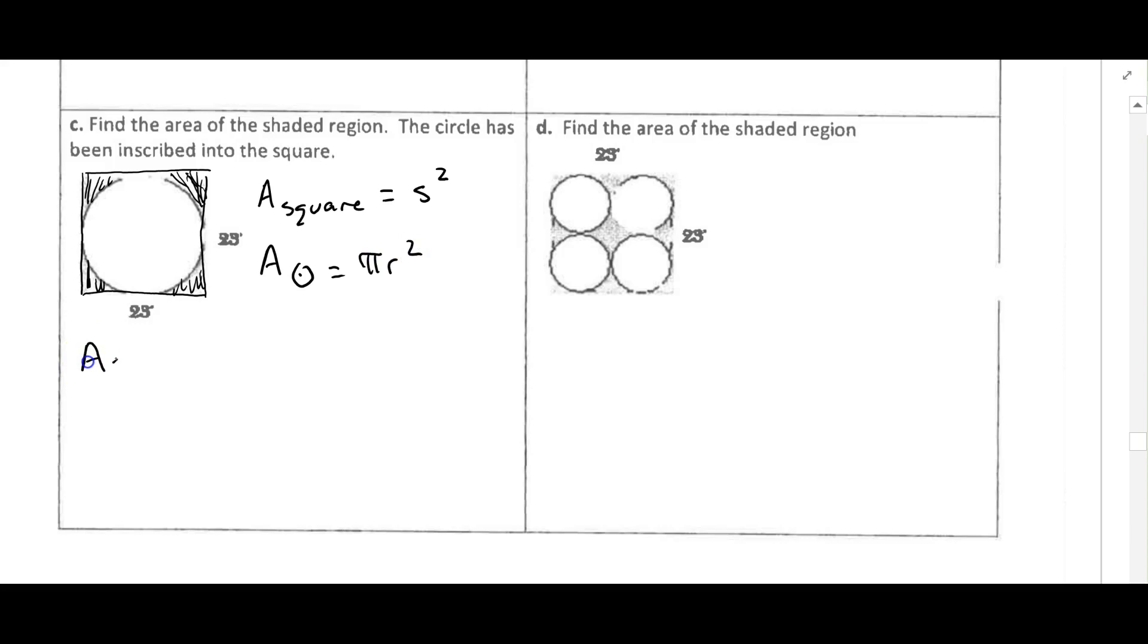Then the shaded area is going to be S squared for the area of the square, minus pi r squared for the area of the circle.